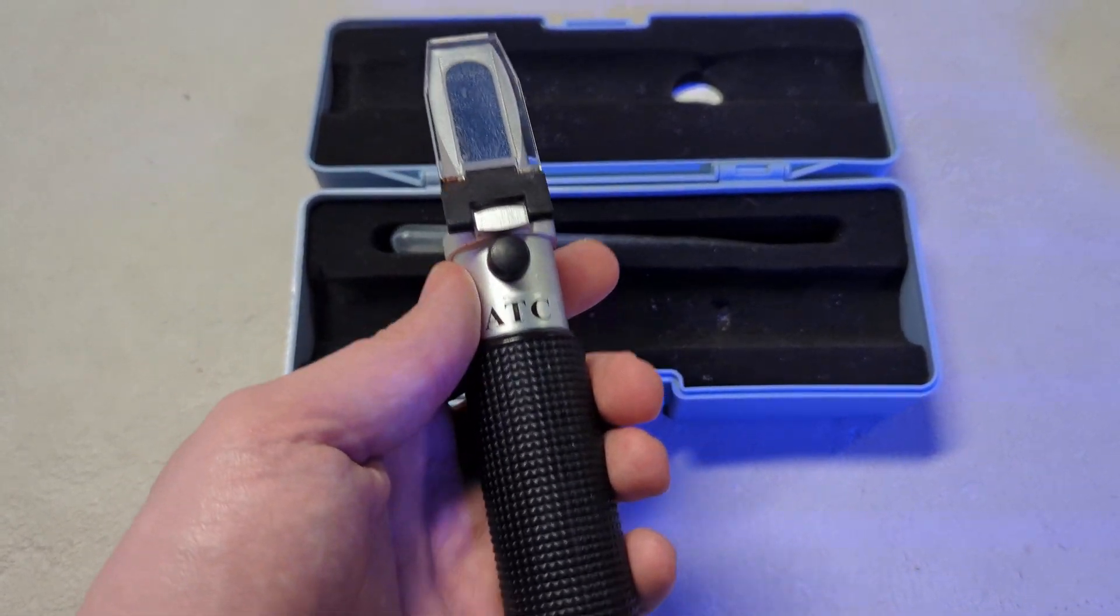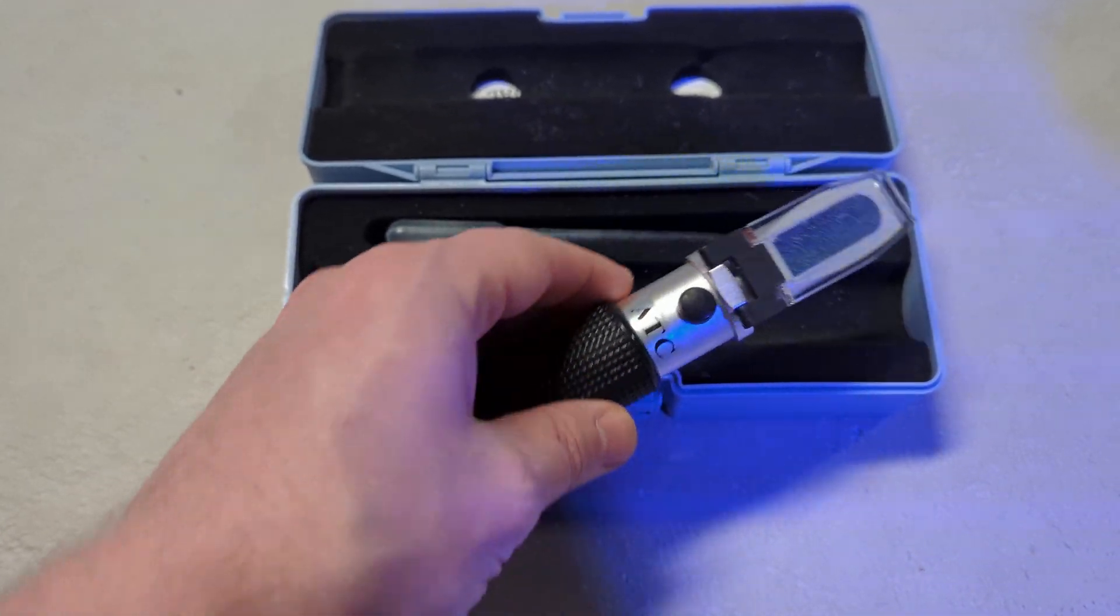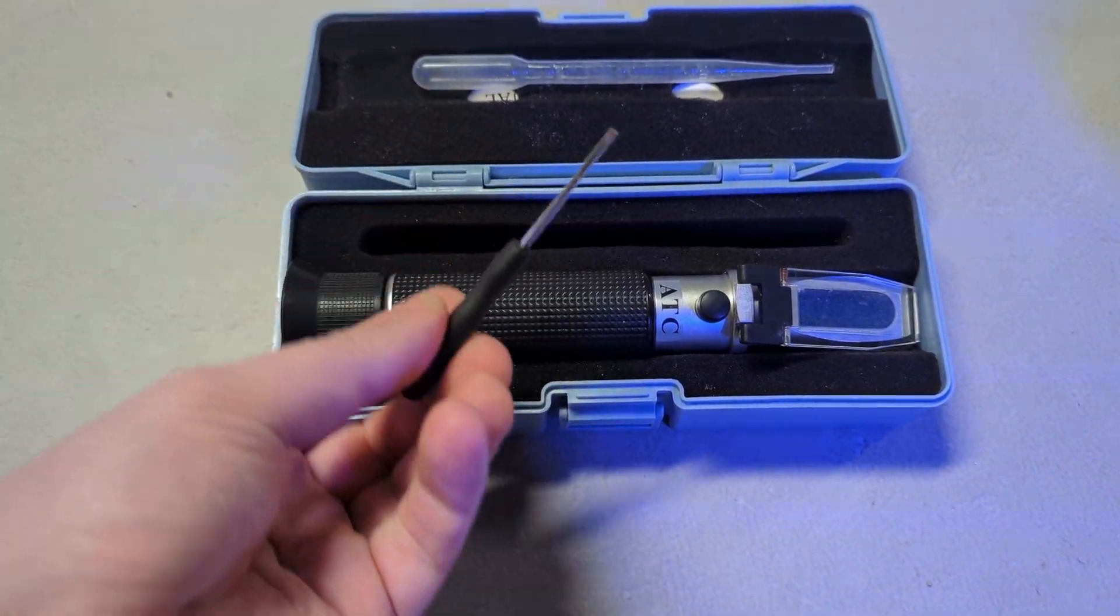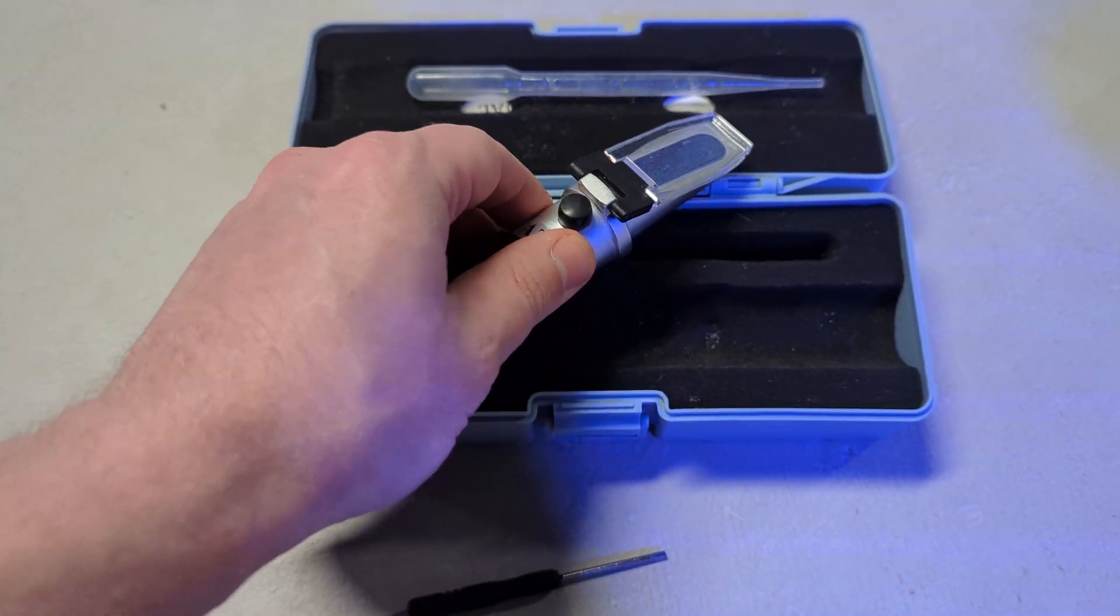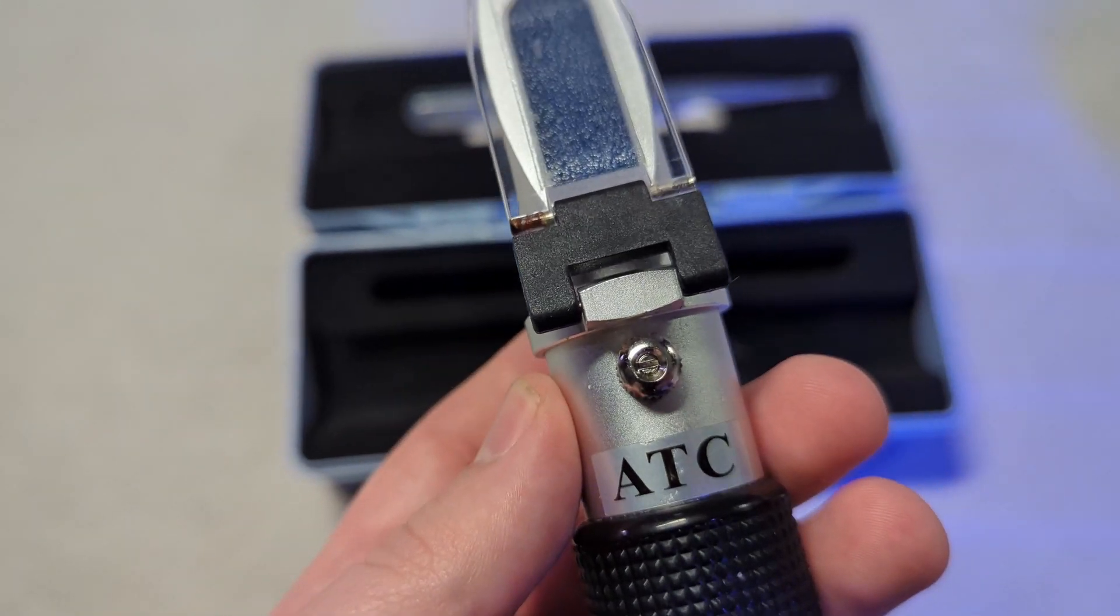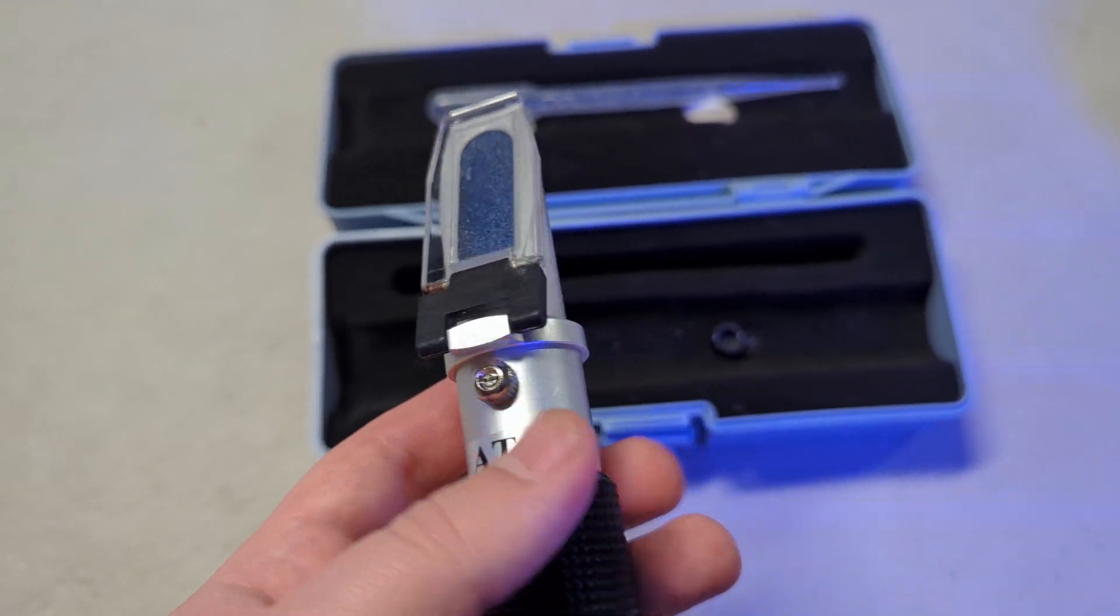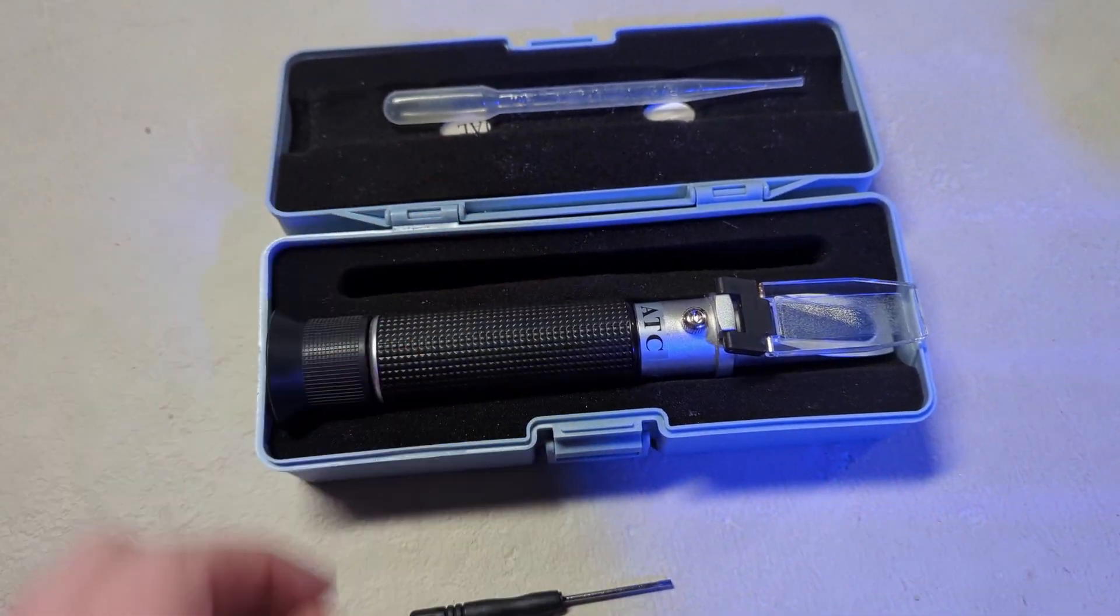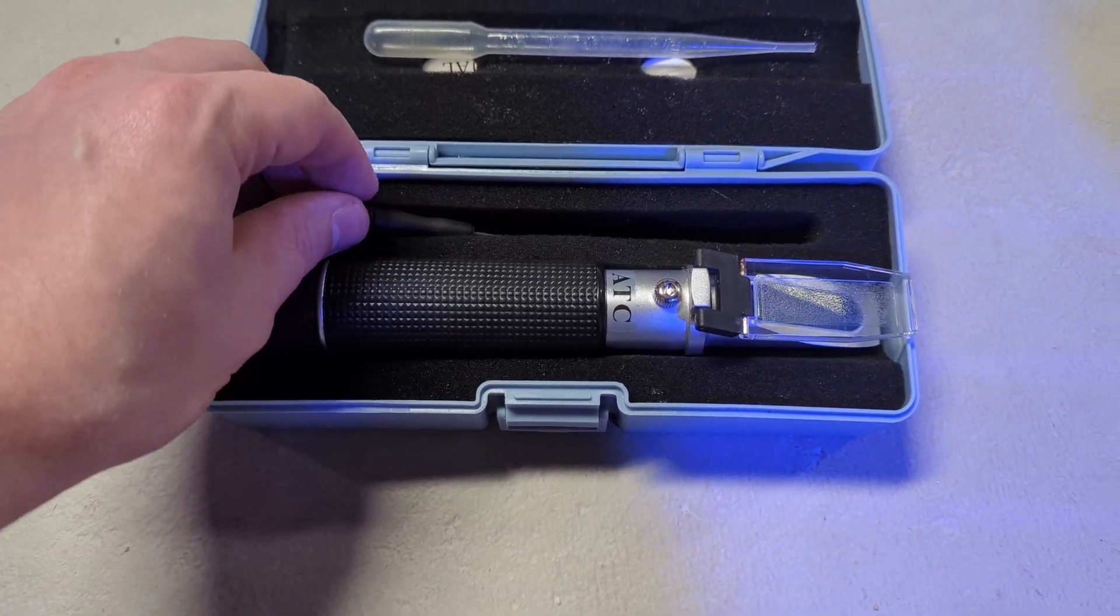You'll want to properly calibrate the refractometer before using it. I recommend using a calibration solution to guarantee you get appropriate readings. To calibrate it, take the little screwdriver out of the box, pop off this rubber piece, place the solution on the eyepiece, look through the lens, and tighten or loosen the screw depending on what salinity level the solution recommends you test for. If anybody is interested in a more in-depth video about that, let me know and I'll be happy to share one.